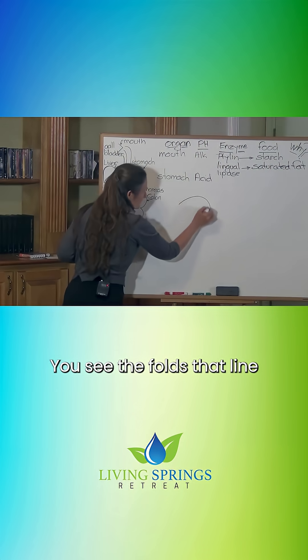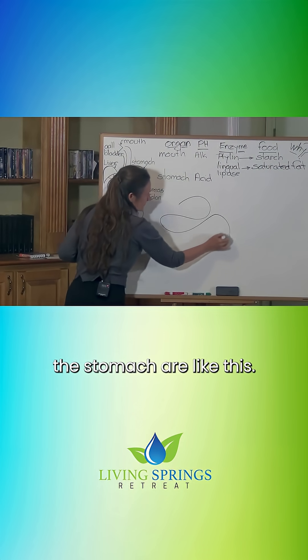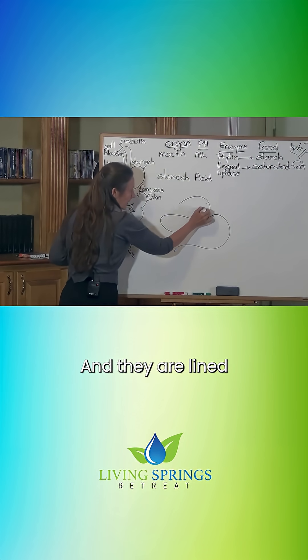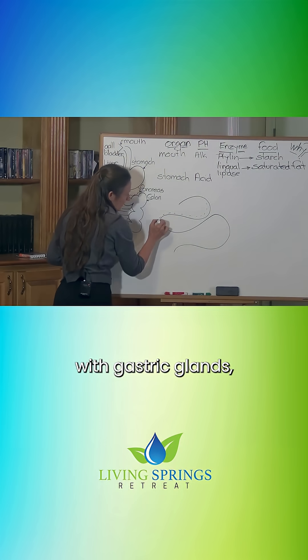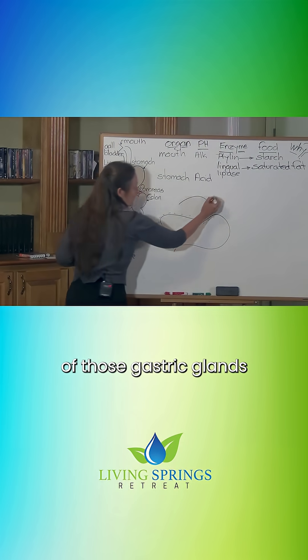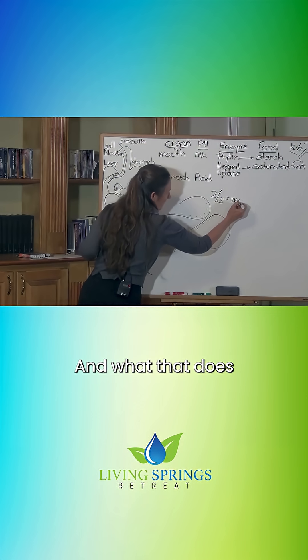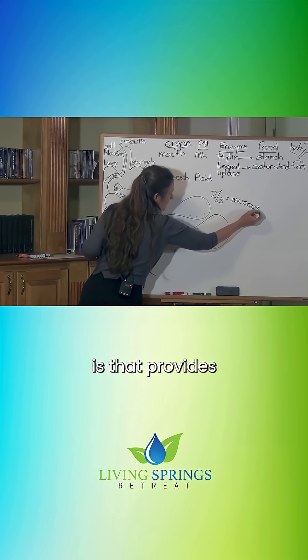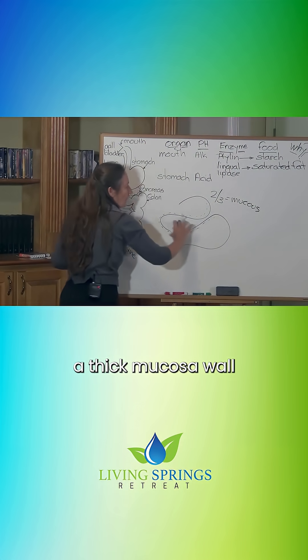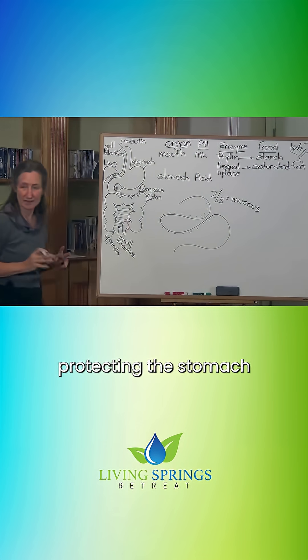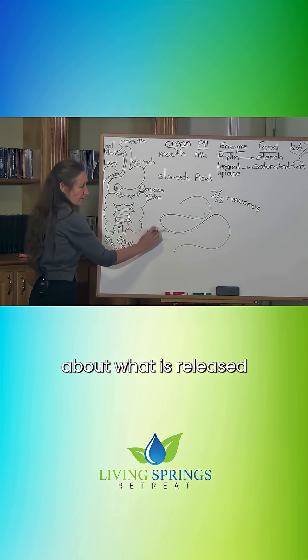You see the folds that line the stomach are like this, and they are lined with gastric glands. Two-thirds of those gastric glands release mucus, which provides a thick mucosal wall protecting the stomach from what is released in here.